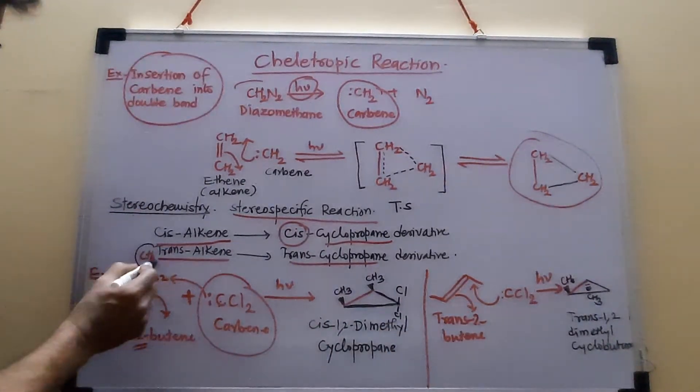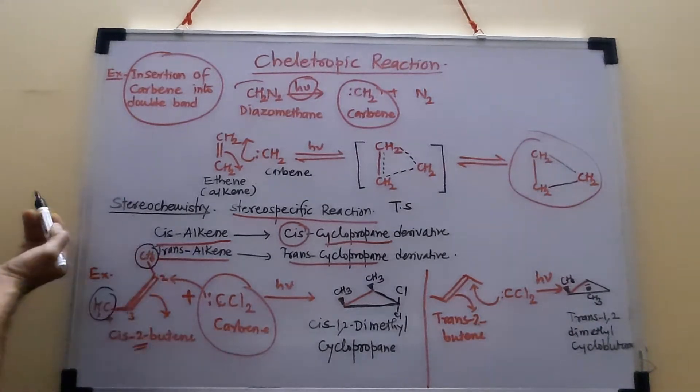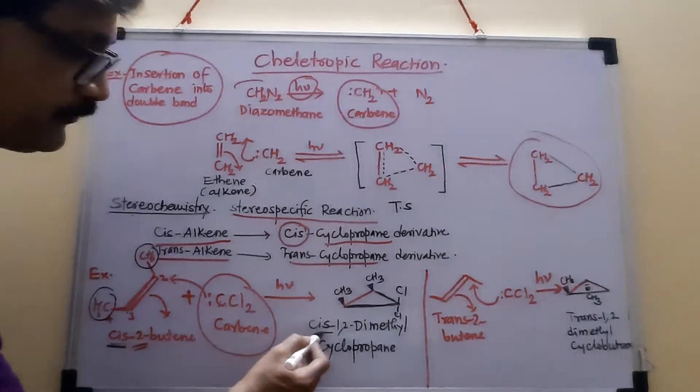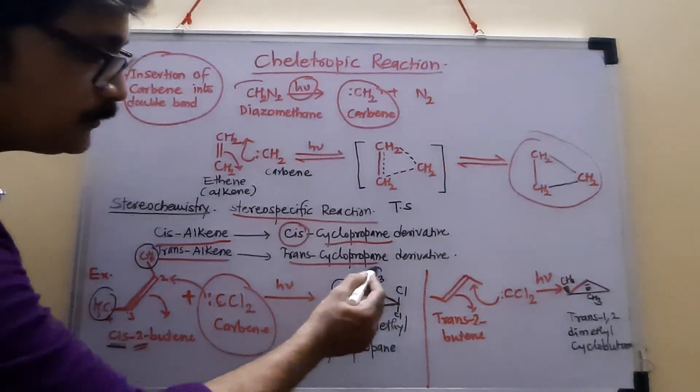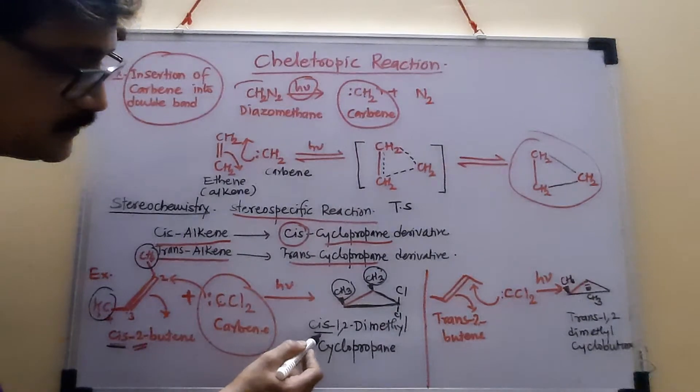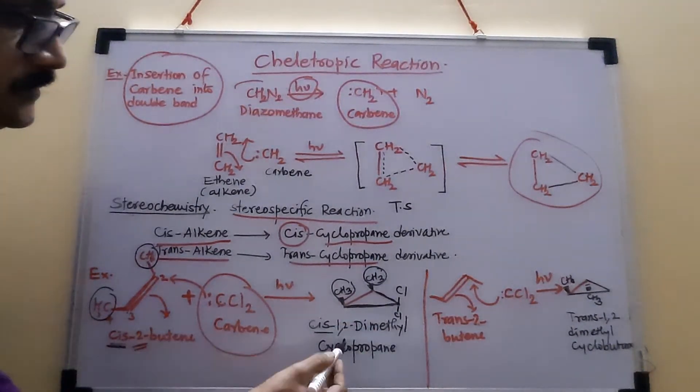So initially, these two methyl groups are towards the same side of the double bond. That's why it is cis. But finally, these methyl groups are also towards the same side of the ring. That's why this isomer is a cis isomer. So cis gives cis.